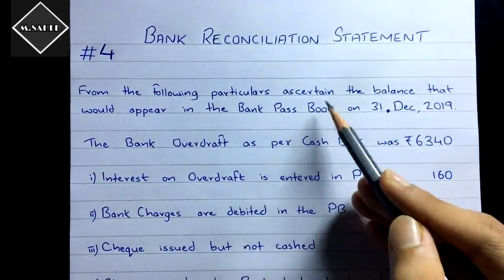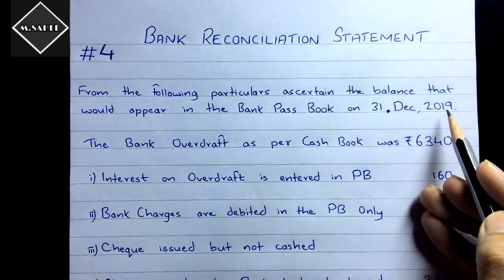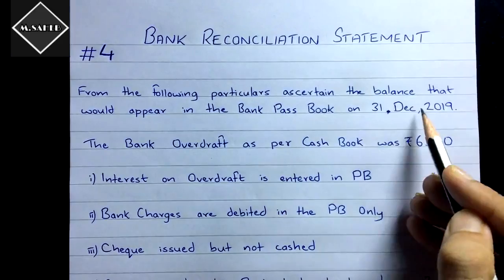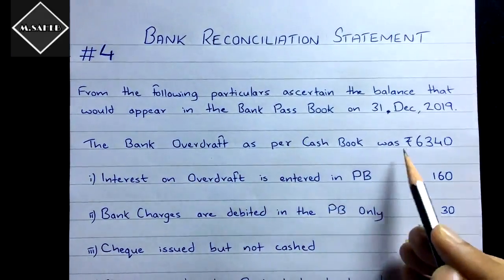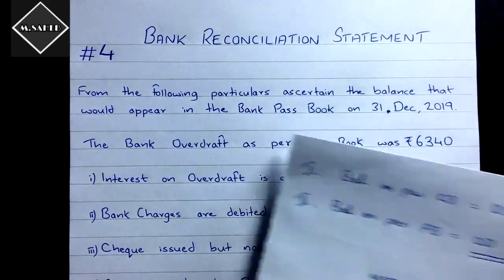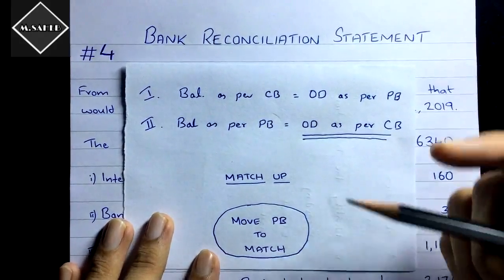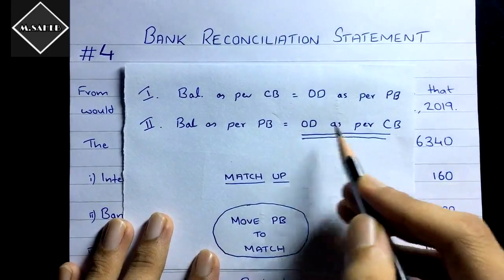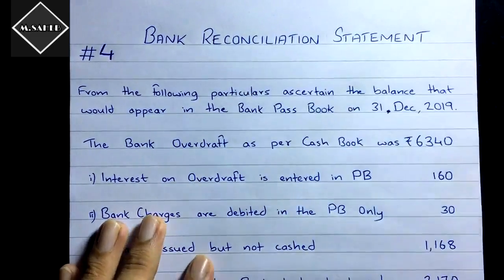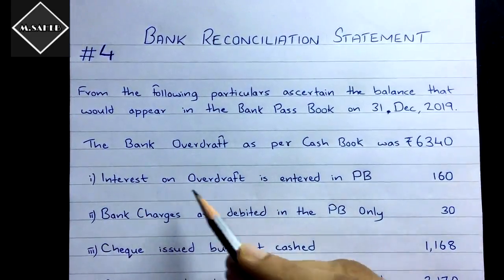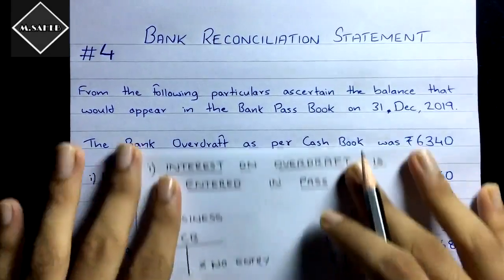Here is the question: from the following particulars, ascertain the balance that would appear in the bank passbook on 31st December 2019. The first item given is the bank overdraft as per cash book was Rs. 6,340. Since overdraft as per cash book is given, this is the second scenario — we move only the passbook finger to do the match-up, and we assume we have been given a favorable balance as per passbook.